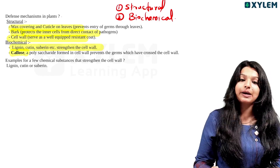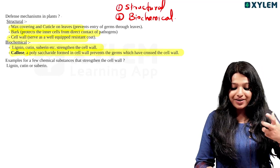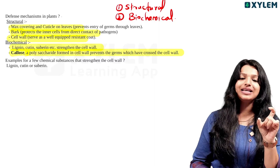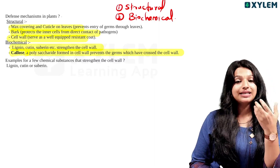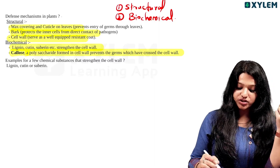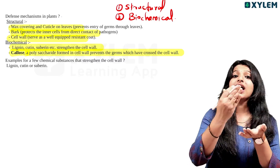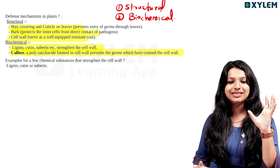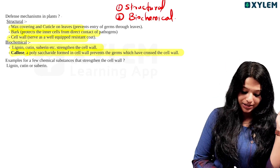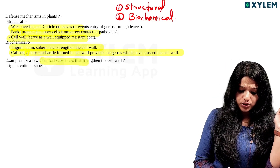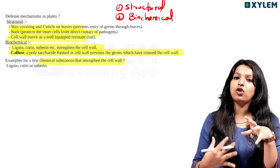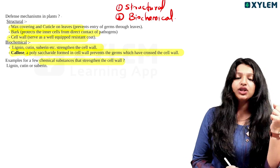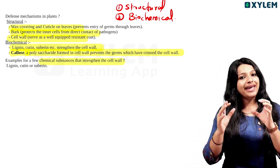Callose — a polysaccharide formed in the cell wall — prevents the germs which have crossed the cell wall. The cell wall prevents the germs which have crossed it. A few chemicals strengthen the cell wall; the chemicals used for this are lignin, cutin, suberin, and others in that category.